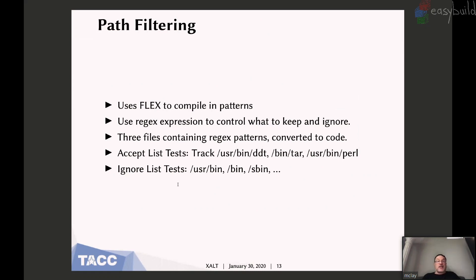We use Flex to do pattern recognition. Exalt is great — it can track every executable on your system. That's the good news, and the bad news is it can track every executable on your system and you don't want to do that. One of the ways I handle that is to ignore things I don't care about. We use Flex to build a pattern recognition system and convert that into C code, which gets compiled into Exalt. It filters based on path — what programs I want to track. I might want to track things like /usr/bin/tar, Perl, etc., but ignore everything else in /usr/bin, /sbin, etc.